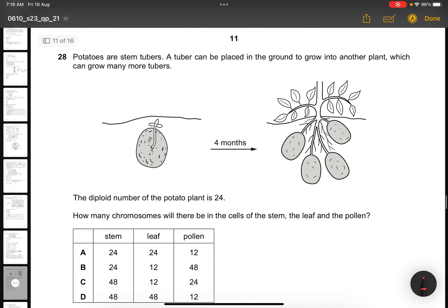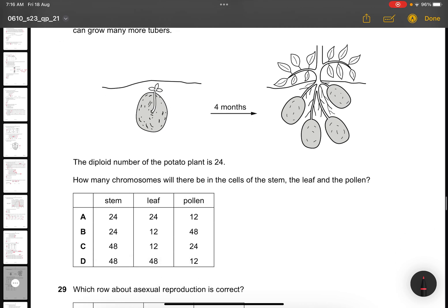Question 28. Potatoes are stem tubers. A tuber can be placed in the ground to grow into another plant, which can grow many more tubers. The diploid number of the potato plant is 24. Since diploid is 24, haploid will be 12. You have to divide by 2. How many chromosomes will there be in the cells of the stem, the leaf, and the pollen? The stem and the leaf are basically organs, so they have to be the same chromosome. However, pollen is a gamete, which is like the sperm cell we have. So they have to be haploid. So the answer will be 24, 24, 12. The answer is A.